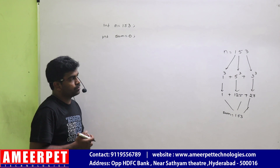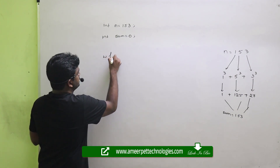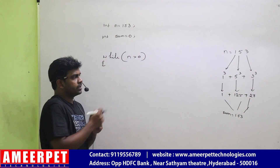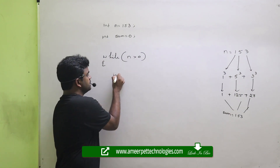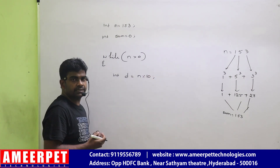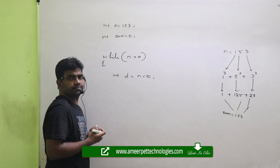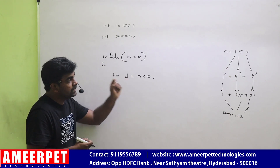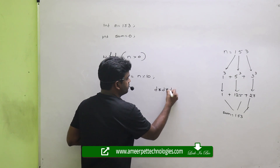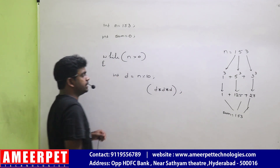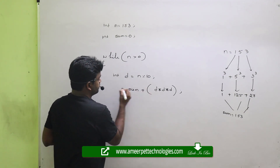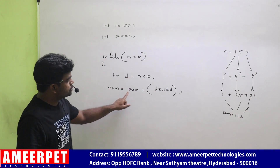Sum value is zero. Now, each digit we are considering until the n value becomes zero. How will you get the last digit? The digit is equal to n mod 10 — it will give you the last digit. After getting the last digit, what we need to find out? We need to cube it. So d is multiplied with d, multiplied with d — it will give you the cube value of the digit. Then that is added to the sum: sum equals sum plus that cube value.